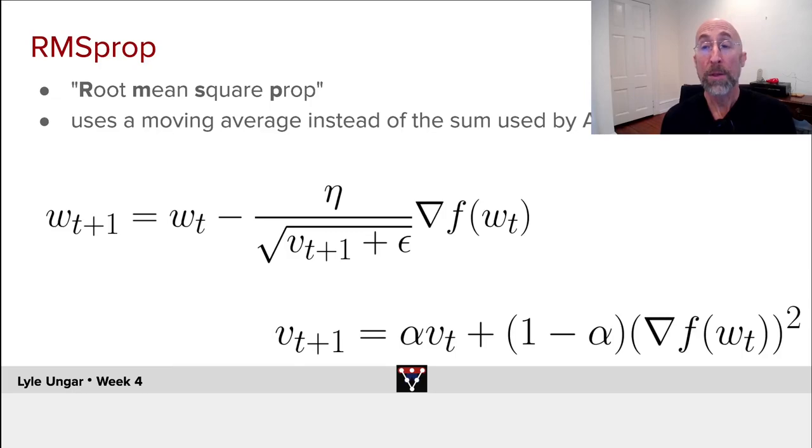This can then be modified in a bunch of ways. One is called root mean square, RMSprop, and you can use a moving average instead of a total sum.